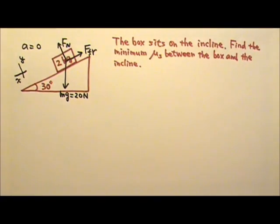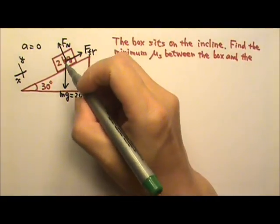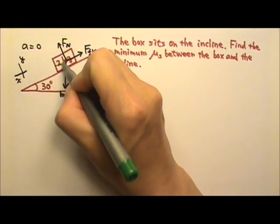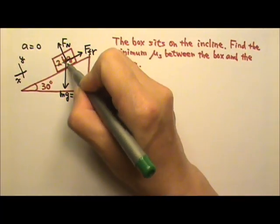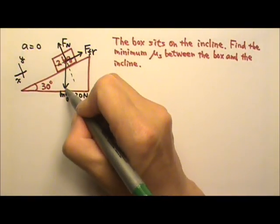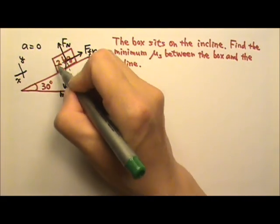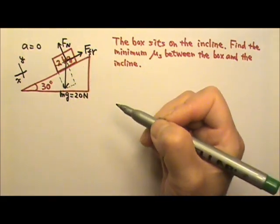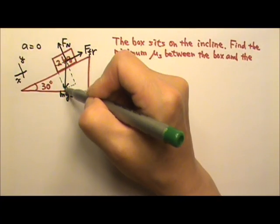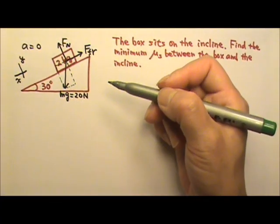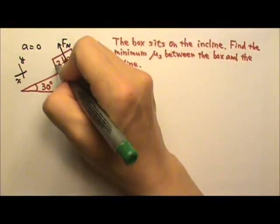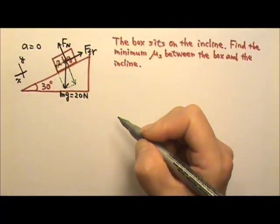To find the components of the slanted Mg, we make a rectangle. One side of the rectangle is parallel to the incline, and the other side is perpendicular to the incline. We have a rectangle with the slanted Mg fitting the diagonal of the rectangle. This gives us the y-component and the x-component.